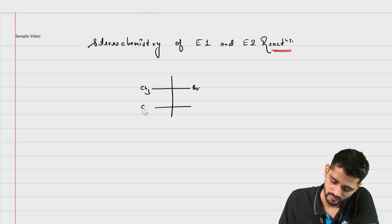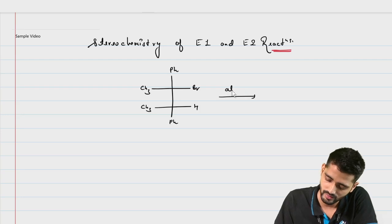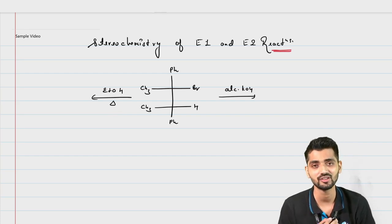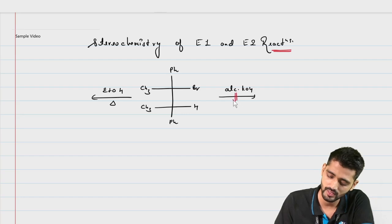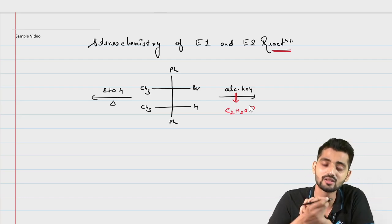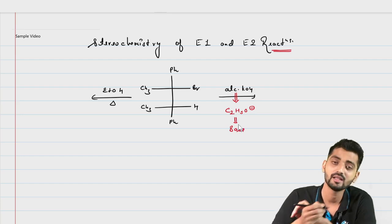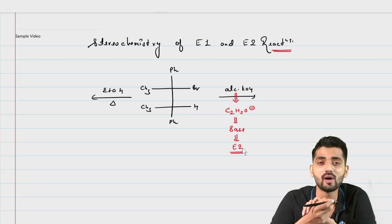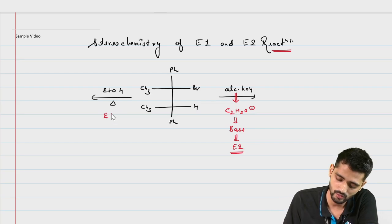For example, if we have a molecule in the Fischer projection and the reactants given were alcoholic KOH, and the second reactant given was EtOH in the presence of heat. First, how are we going to identify which reaction is going to take place? Looking at the reagent alcoholic KOH, we know that the actual nucleophile present here is C2H5O⁻, and due to its bulkiness and strength it behaves as a strong base, so it will be performing E2 elimination. EtOH is a neutral base, so it will be going via the E1 pathway.